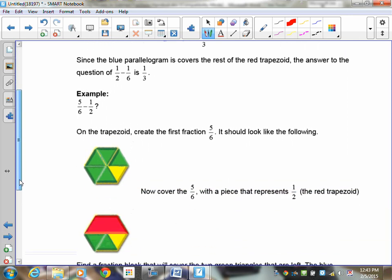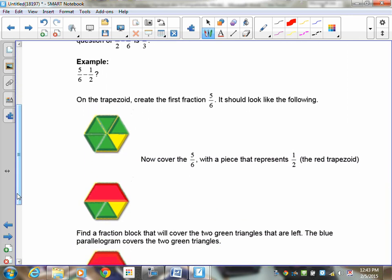What about 5 sixths take away 1 half? Well, you take out your yellow hexagon and you put your green triangles on it. We're taking 5 sixths so I'm going to need 5 one sixths or 5 green triangles. You'll notice it covers it all up except for one shape of a green triangle, which is yellow. That is the 5 sixths.